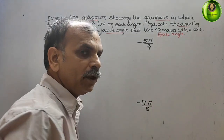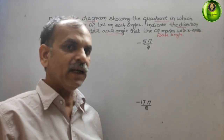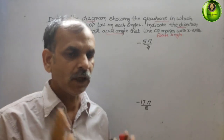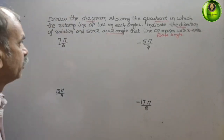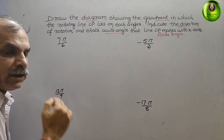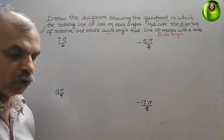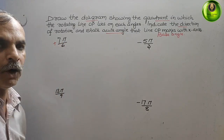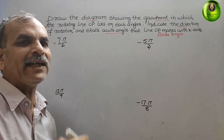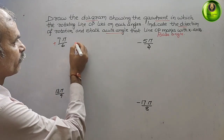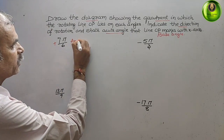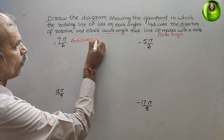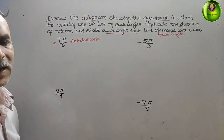Here they have given 7π/6. This is positive, and positive indicates anticlockwise rotation. Now we will draw the diagram.